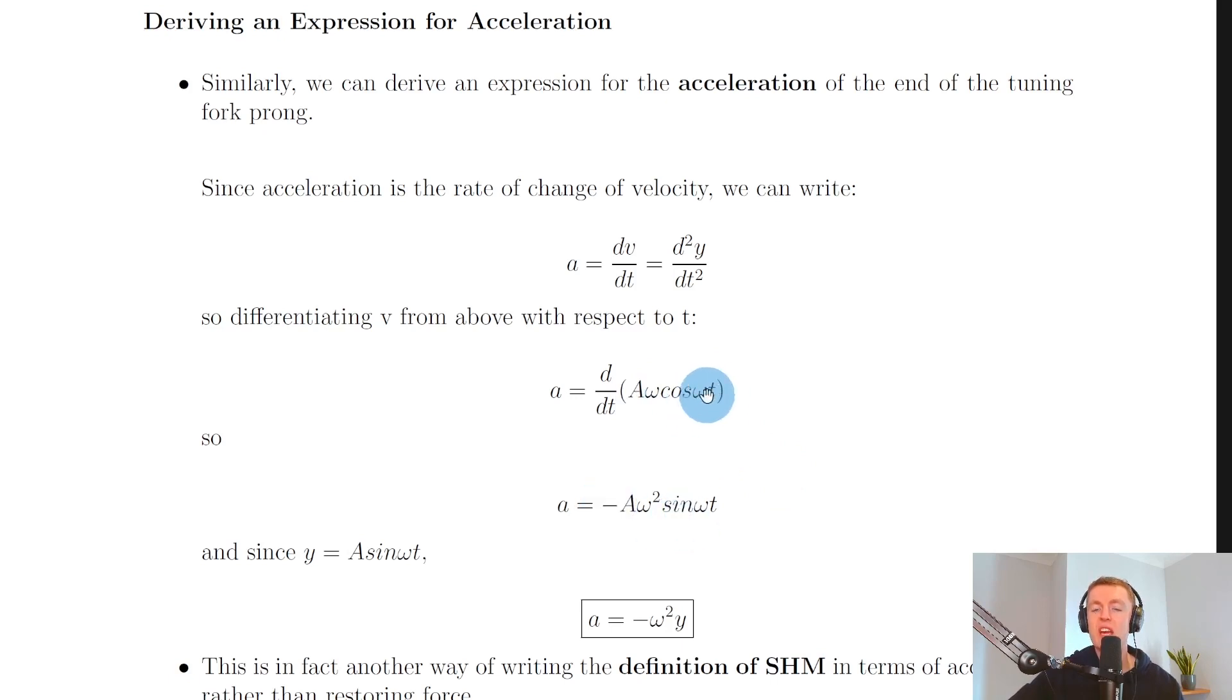and then we need to differentiate inside this term with the omega times the t, so we times everything by omega. So we end up with a equals minus a omega squared sine omega t.